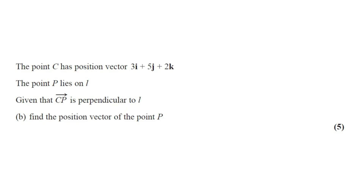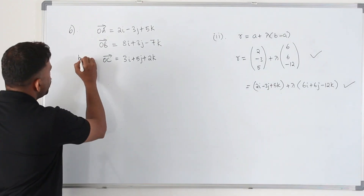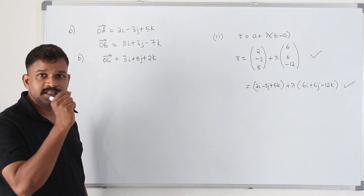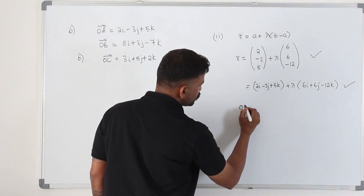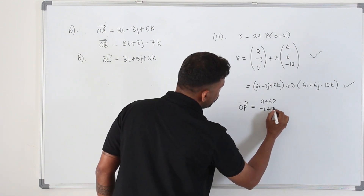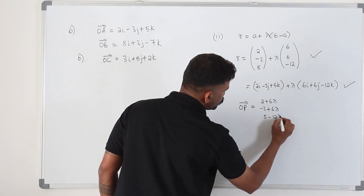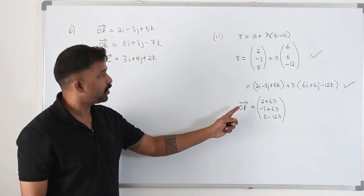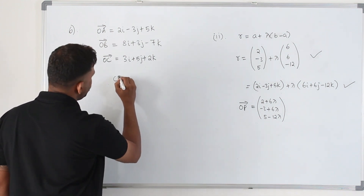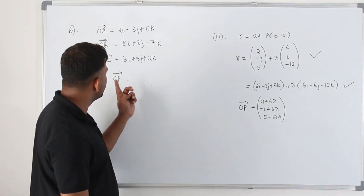The point C has position vector 3i plus 5j plus 2k. The point P lies on L. Given that CP is perpendicular to L, part B asks us to find the position vector of point P. Since P lies on the line, we can write the position vector of P as: (2 + 6λ, −3 + 6λ, 5 − 12λ). That is the position vector of any point on this straight line. We now need to find the CP vector first, since CP is perpendicular to the line.